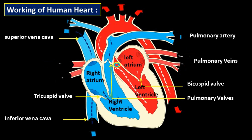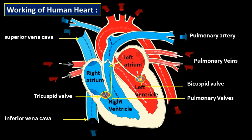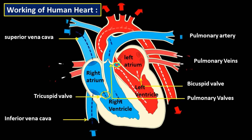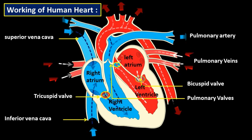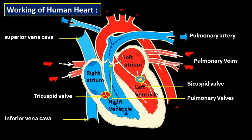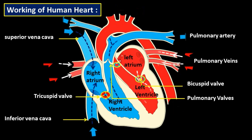Blood circulation has two main parts: pulmonary circulation and systemic circulation. Pulmonary circulation is the movement of deoxygenated blood away from the heart toward the lungs, and the return of oxygenated blood back to the heart. Systemic circulation is the movement of oxygenated blood from the heart toward the body, and the return of deoxygenated blood back to the heart. Since blood enters the heart twice during each cycle, this is known as double circulation.